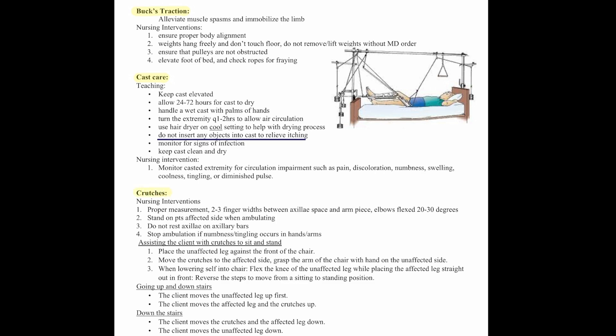When it comes to crutches, make sure they are measured properly — two to three finger widths between the axilla space and the arm piece. Elbows should be flexed 20 to 30 degrees. Stand on the patient's affected side when ambulating. Do not rest the axilla on the axillary bars and stop ambulation if numbness or tingling occurs in hands or arms. When assisting a client with crutches to sit to stand: place the unaffected leg against the front of the chair, move the crutches to the affected side, grasp the arm of the chair with the hand on the unaffected side. When lowering into the chair, flex the knees of the unaffected leg while placing the affected leg straight out in front. Reverse the steps to go from sitting to standing.